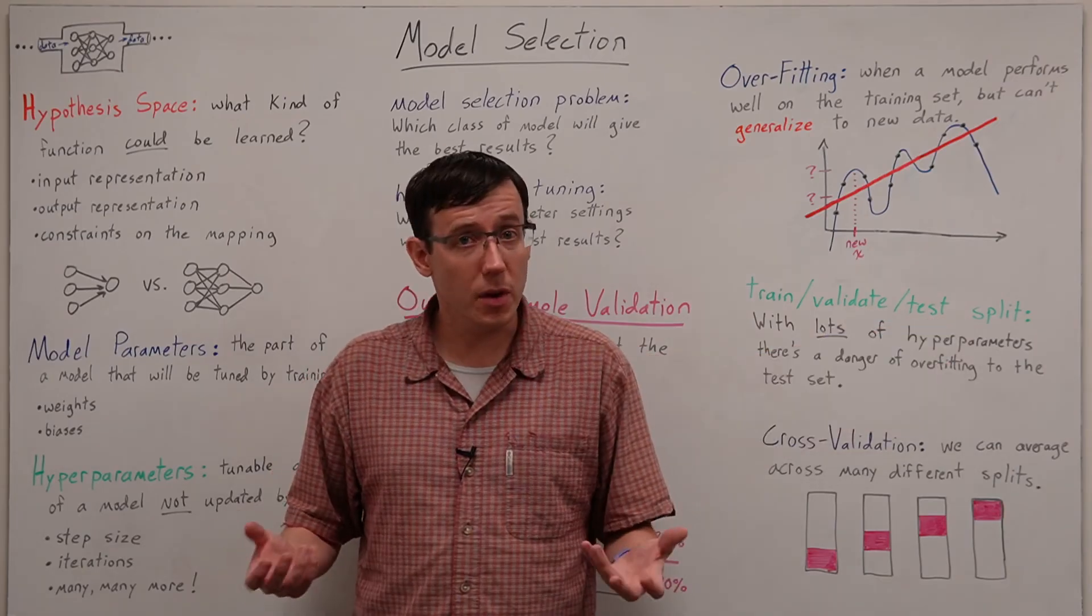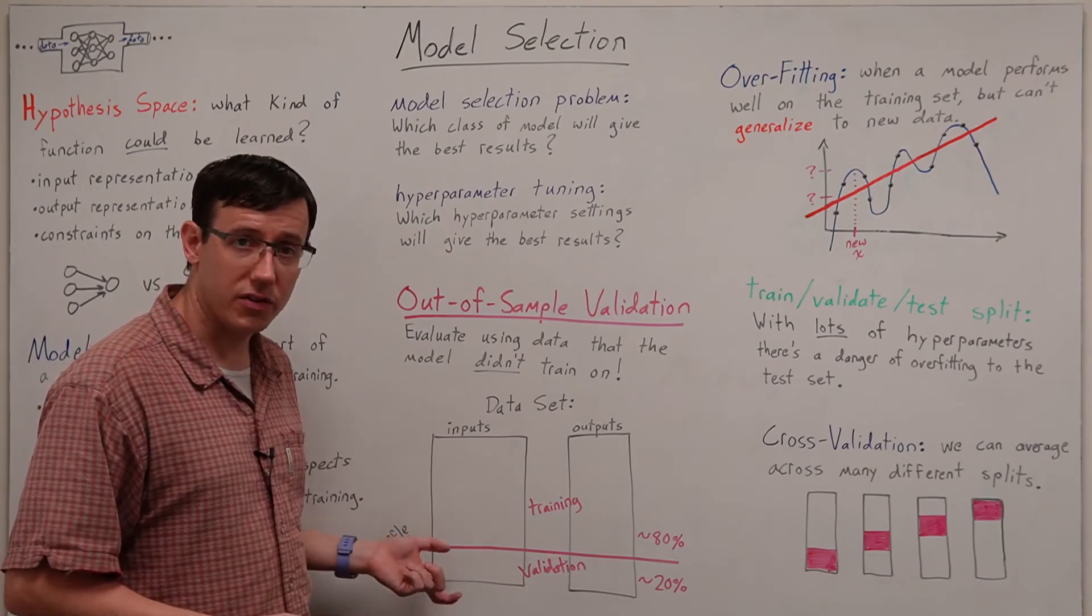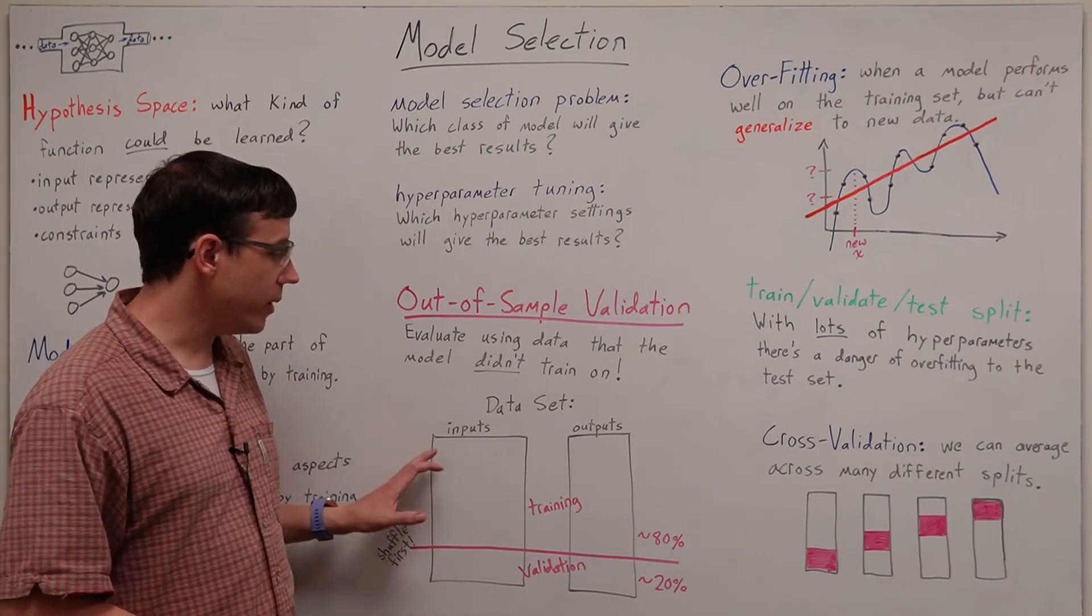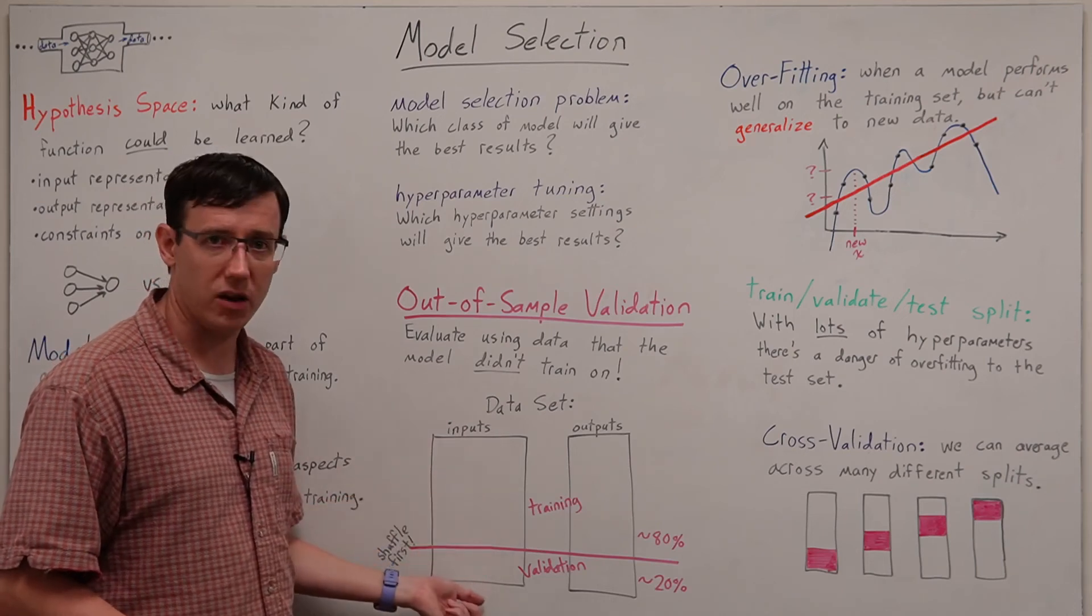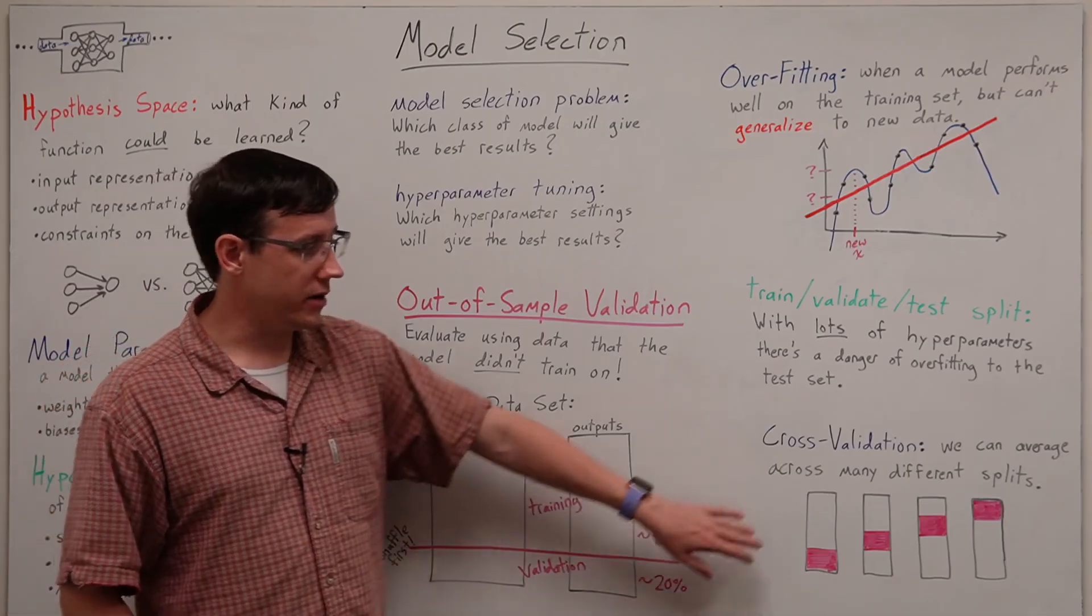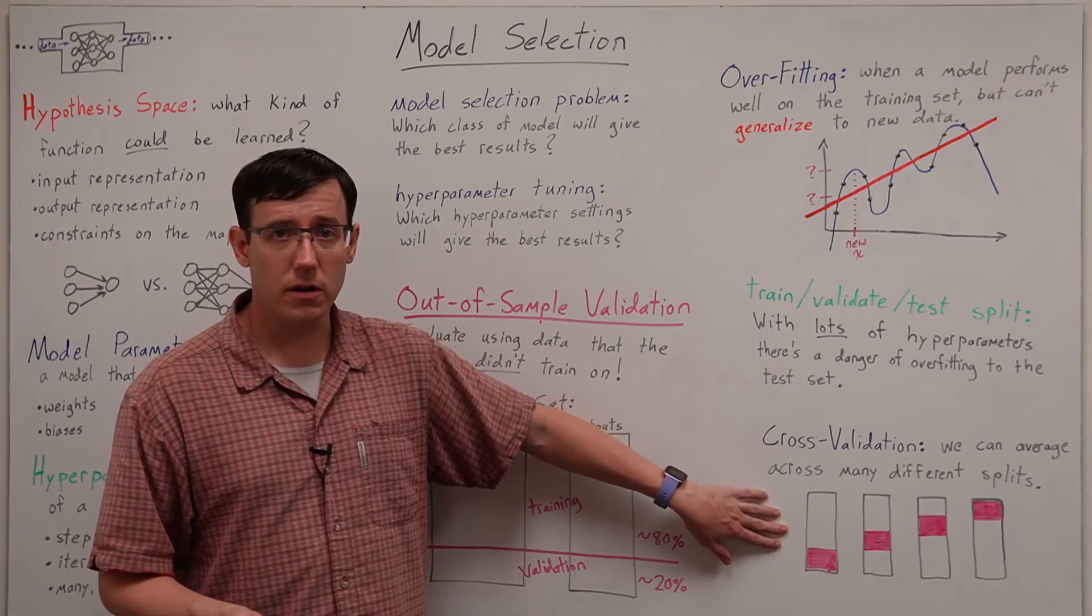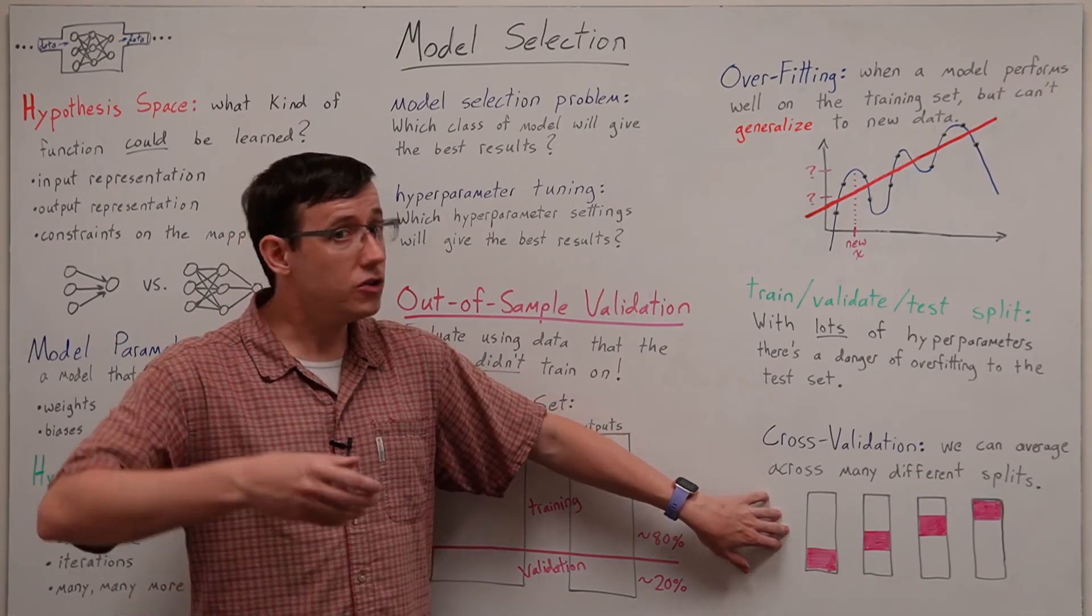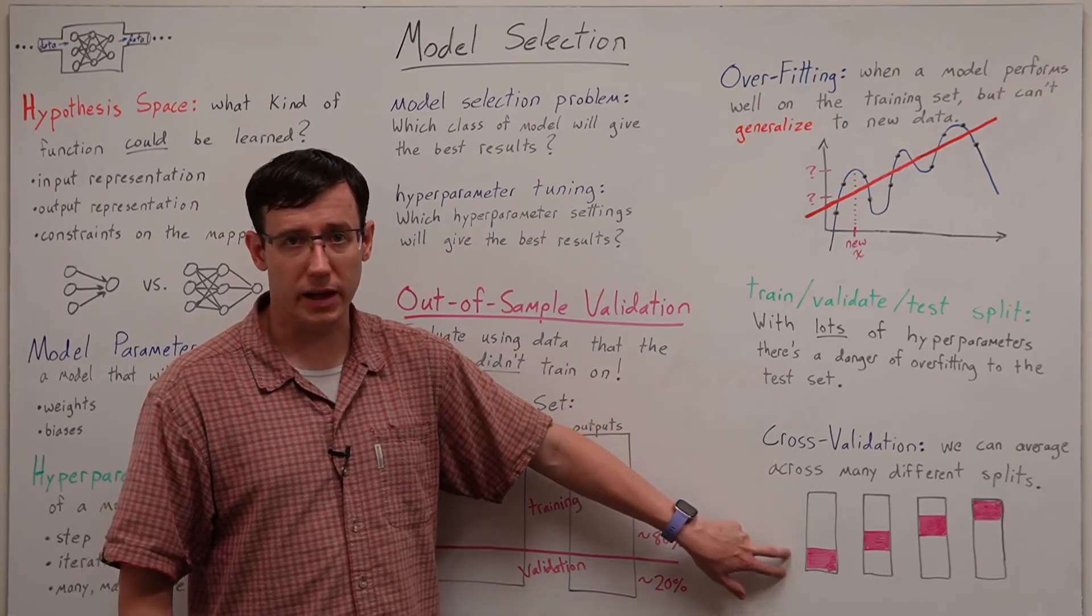Finally there may be some cases where we're not happy with always validating on the same subset of the data even if we randomized which data went into the training set and which was for validation and in that case we can actually use our entire data set for training and for validation by averaging our performance across several different test train splits.